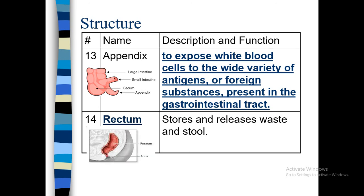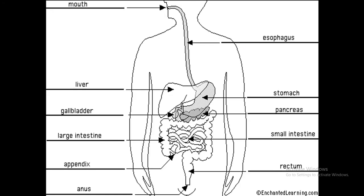The rectum ends at the external body opening, which is the anus. To summarize: mouth, esophagus — a long tube — stomach, and with the stomach there is the liver, pancreas, gallbladder, small intestine, large intestine, rectum, appendix, and anus. Okay, thank you.